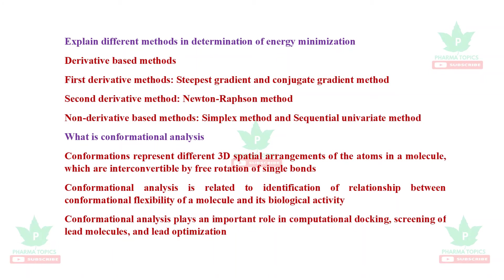The different methods for determination of energy minimization are: first derivative methods such as steepest descent and conjugate gradient method; second derivative method, which is the Newton-Raphson method; and non-derivative methods such as the simplex method and sequential univariate method. What is conformational analysis? Conformations represent the different 3D spatial arrangements of atoms in a molecule which are interconvertible by free rotation of single bonds.